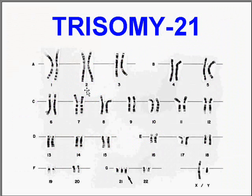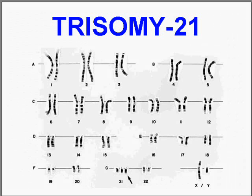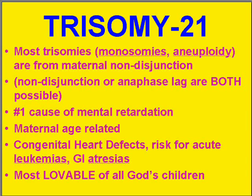Here's trisomy 21. In the old days, these pictures were just cut out and matched so you could identify all the chromosomes. When you get down towards the G region — which are the shortest ones — you can see there's an additional one. That's trisomy 21, a classical board question. In Down syndrome babies, most are the result of maternal non-disjunction, in which the chromosomes don't separate.